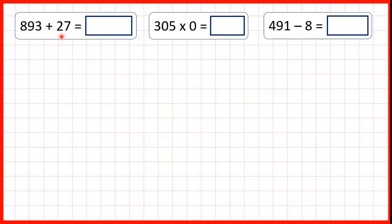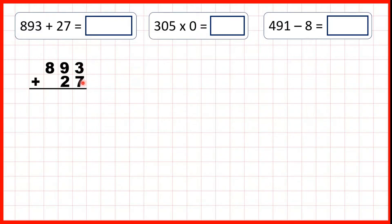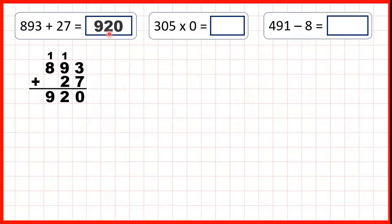893 plus 27. So we can set this out as a column addition, making sure we've got our digits lined up on the right hand side. 3 plus 7 is 10, so 1, 0. 1 plus 9 plus 2 is 12, so 1, 2. And 1 plus 8 is 9, so our answer is 920.